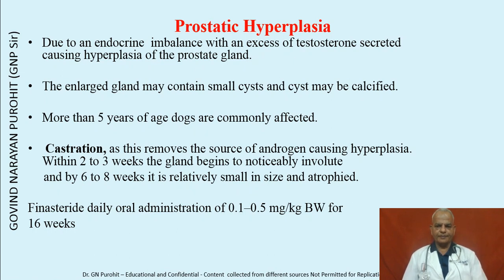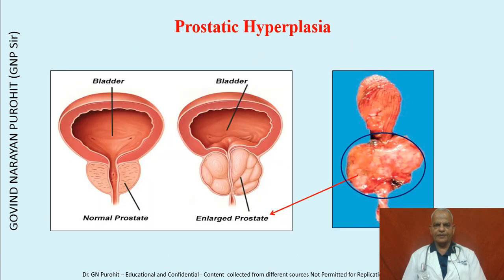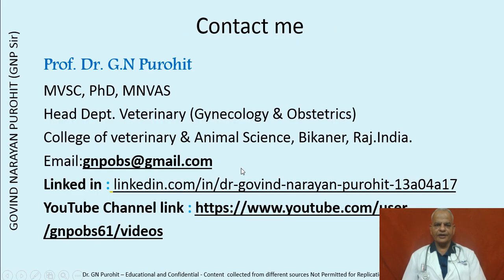Phenosteroid is a pharmacological agent which can be given daily at a dose rate of 0.1 to 0.5 mg/kg body weight for 16 weeks, and can help in the therapy of prostatic hyperplasia. The enlarged prostate causes shortening of the lumen of the urethra and urinary incontinence, compared to the normal prostate.